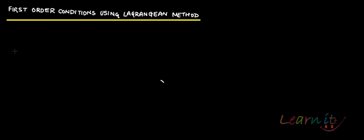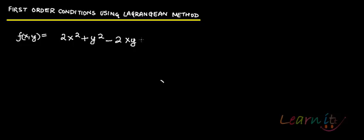In this recording we'll talk about how to use the Lagrangian method for optimizing any objective function over a set of certain constraints. I'll give an example first and then the general view of the problem. Suppose you have the function f(x,y) = 2x² + y² - 2xy + 6, and the constraint g(x,y) = x + y = 1.